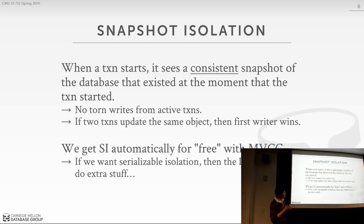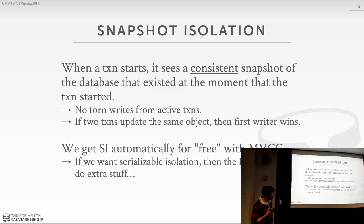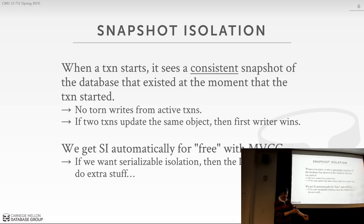Another way to describe not seeing modifications from uncommitted transactions: these are called torn writes. If my transaction updates two tuples, I should see either all of them or none of them — not just one. Under snapshots, if two transactions try to update the same object at the same time, the simple approach is to let the first writer win and abort the second. With MVCC, we essentially get snapshot isolation. If you implement MVCC, you get snapshot isolation — they're tautologically linked.